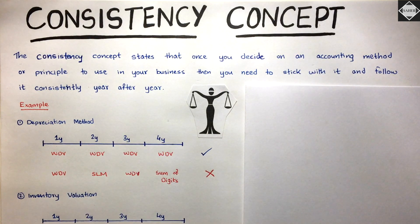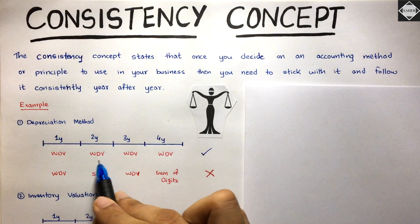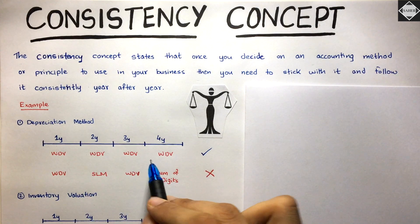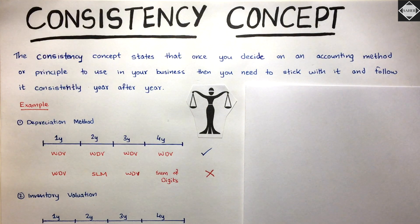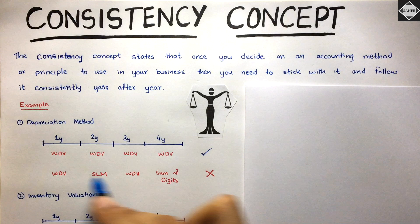If you are a proper accountant, you will follow the consistency concept and in the second, third, fourth, and all following years you will use the same depreciation method unless there is a special reason. This is what is meant by following the consistency concept. If you applied WDV in the first year, SLM in the second year, back to WDV in the third year, and then sum of digits in the fourth year, this is completely wrong.